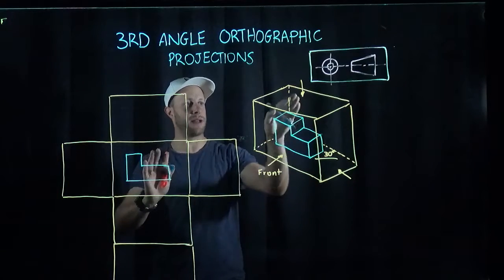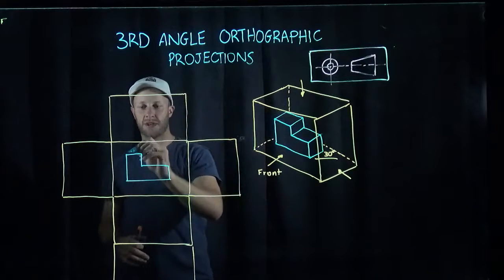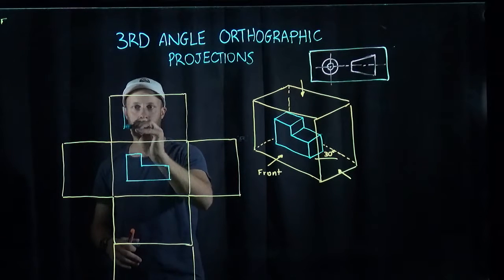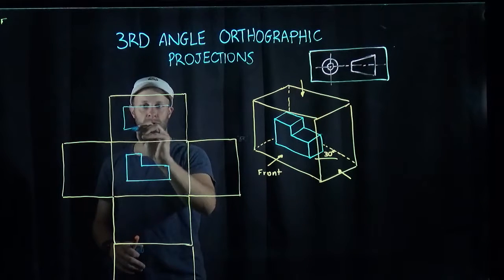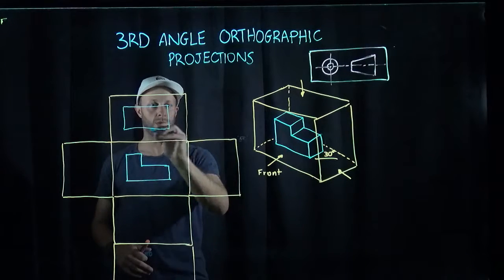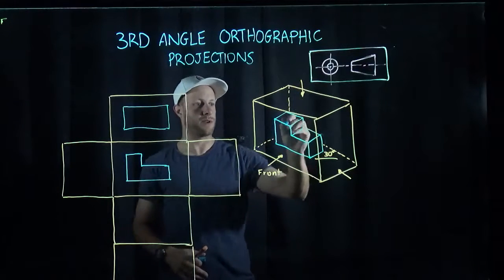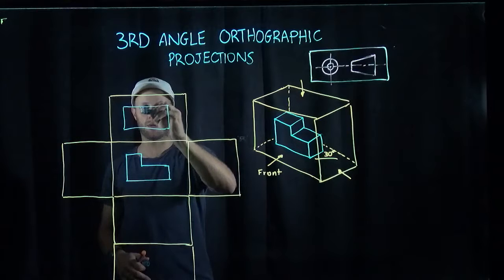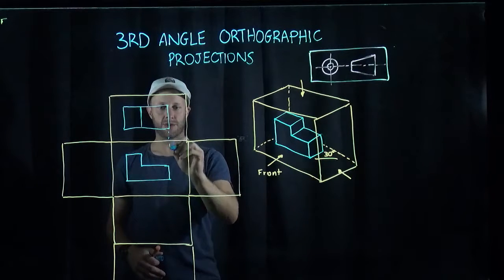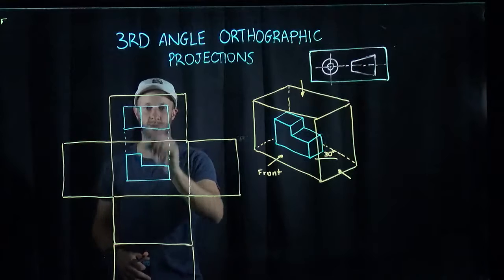Now, if I project that on the top view, I'm going to see just a rectangle looking down from the top. Don't forget this edge here as well. The key is that these should always line up.